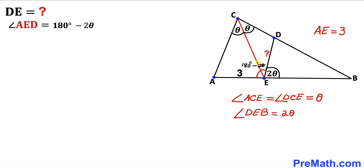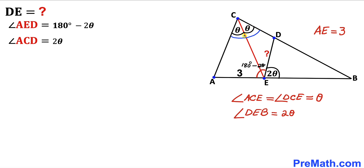So therefore angle AED turns out to be 180 degrees minus 2 theta. Also, we know that the whole angle ACD is going to be theta plus theta, which makes 2 theta.